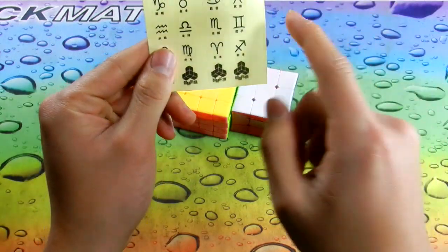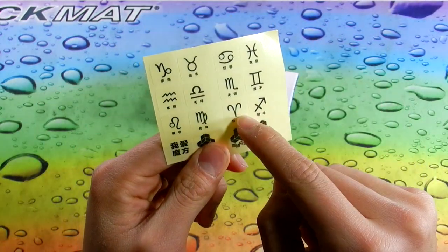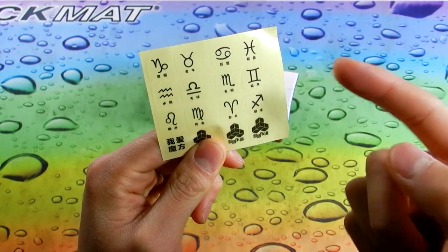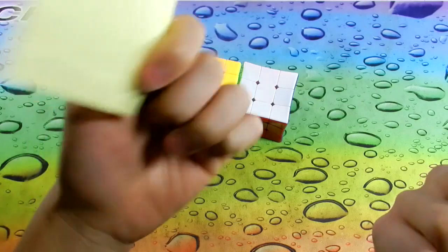And then there's some stickers here, and this is like the Chinese zodiac sign. I know this says the goat and then it says 'I like Rubik's cube' down here.